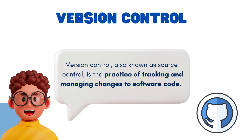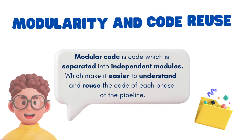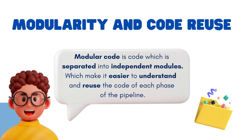One popular version control system is GitHub. Then, we have to consider creating modular, reusable code. Modularity is one of the most crucial concepts in creating reliable applications. We need to create independent code for each part in our machine learning pipeline, which makes it easier to do further modifications or even reuse the code later.